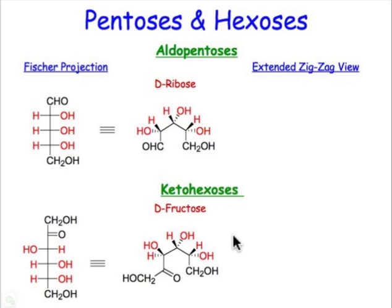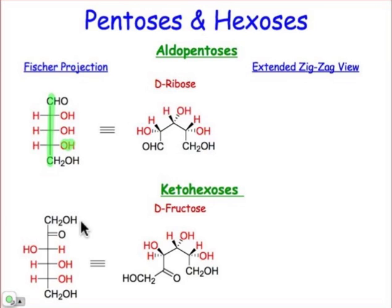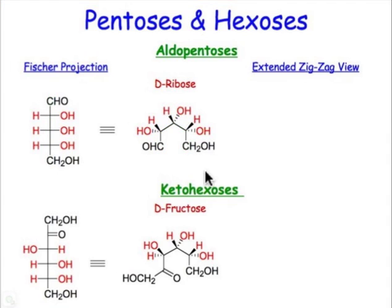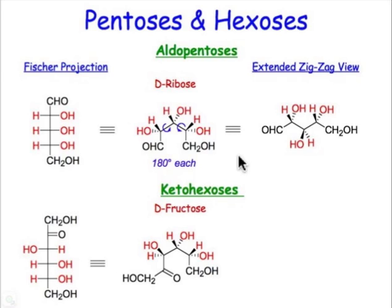Now let's look at some pentoses and hexoses and compare aldoses and ketoses. Starting with D-ribose — an important building block for the sugar part of nucleic acids. The vertically oriented carbon chain has three stereocenters, all on the right-hand side. It's a D sugar because the bottom-most hydroxyl group is on the right-hand side. You need to build a model and do two bond rotations to take this convenient Fischer projection form — where all three hydroxyl groups are on the same side — into the planar zigzag form. When you do that, you can see the position at C3 has its hydroxyl group coming out, whereas C2 and C4 have hydroxyl groups going back.